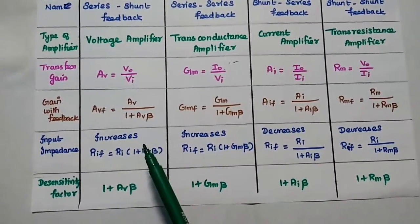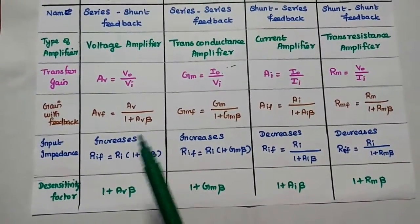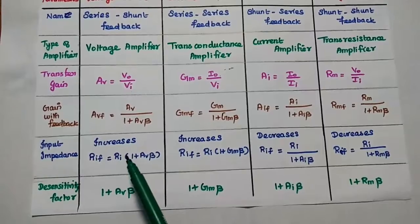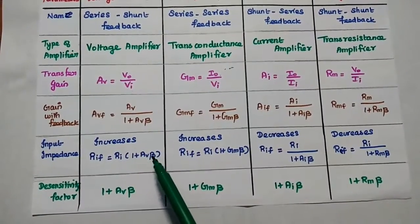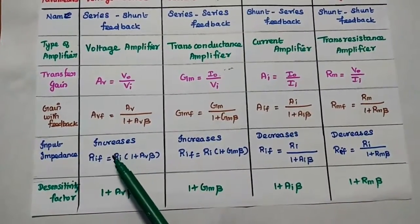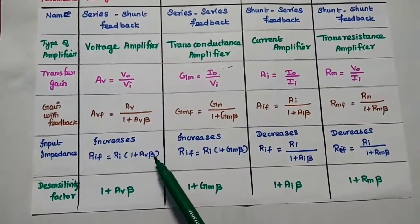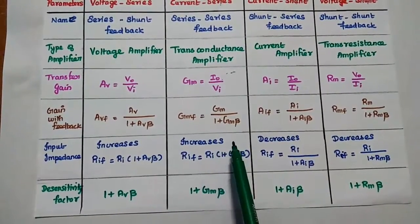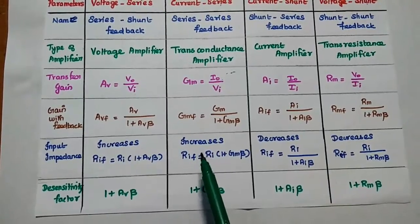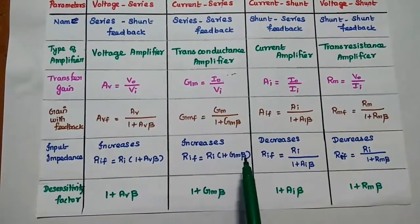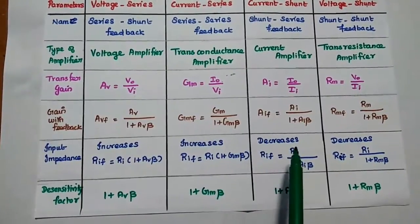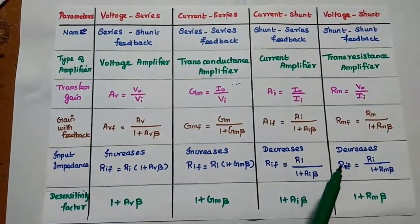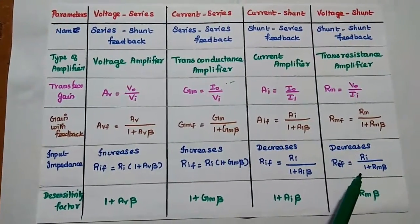The input impedance for series-shunt feedback increases. The value with feedback equals the without-feedback value multiplied by (1 + Av·β). We can increase the input impedance by the factor (1 + Av·β). For series-series feedback, input resistance is also increased by (1 + Gm·β). For current shunt, the input resistance is decreased by the factor (1 + Ai·β). For voltage shunt, its value is also decreased.